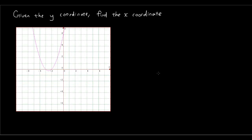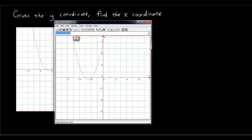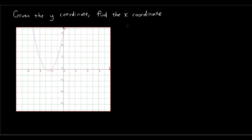Hey guys, in this tutorial we are going to talk about in a parabola, if I give you the y coordinate can you give me the x coordinate of the graph. So let's have a look at this graph which we drew previously in Graphmatica, and the equation was y equals x squared plus 5x plus 6. Let's say I wanted to know that when y was equal to 2, what's x?